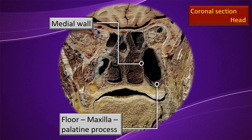The medial wall is a partition between the maxillary sinus and the nasal cavity — medial to this wall is the nasal cavity, lateral to it is the maxillary sinus. Importantly, the maxillary hiatus is located in the upper part of the medial wall, closer to the roof than the floor. This means gravity-aided drainage is difficult. In the event of infection, pus must depend on the ascending ciliary current of the mucous membrane to drain.